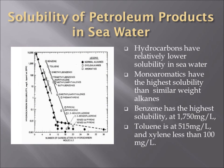In this solubility diagram, it illustrates that among all kinds of hydrocarbons, benzene has the highest solubility at 1750 mg per litre, with toluene at 550 mg per litre, and xylene at less than 100 mg per litre. Apart from benzene, monoaromatics have the highest solubility, similar to alkanes. In conclusion, hydrocarbons pose a very serious problem to aquatic life. The oil leak that happened in the Gulf of Mexico triggered many environmental issues to local ecosystems. Hence, it is very significant for each country to prevent petroleum from leaking into seawater.